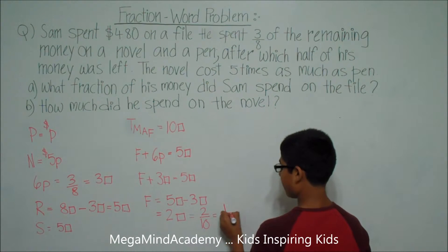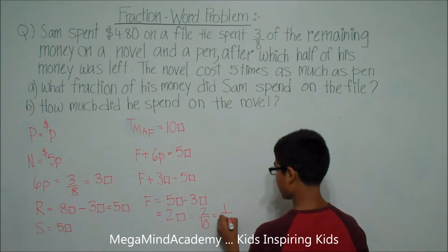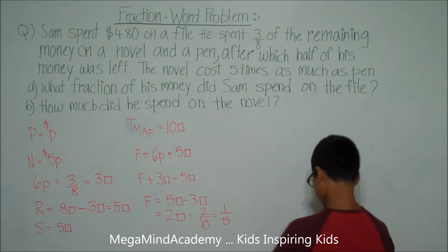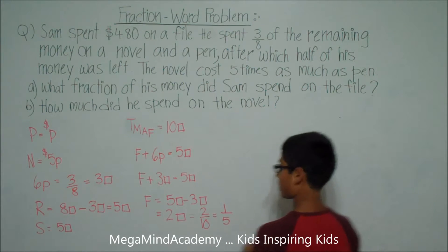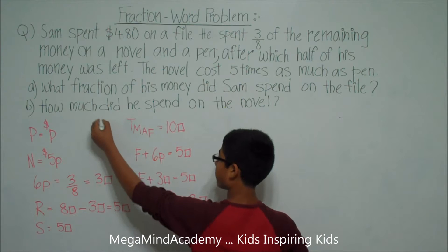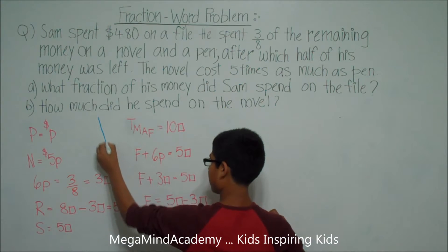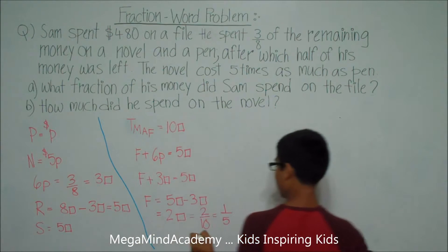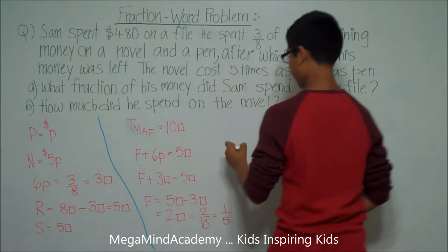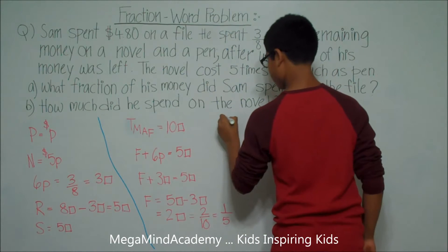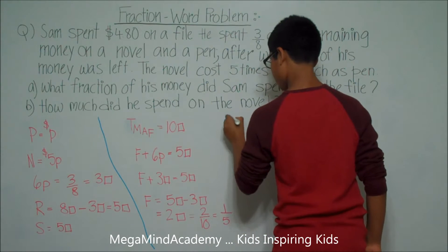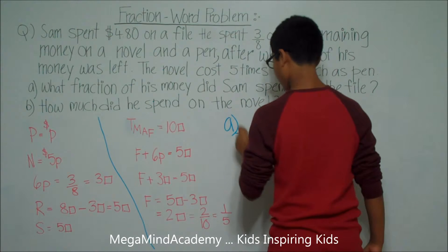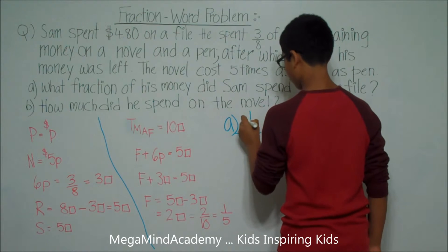So the file is equal to two-tenths — he spent two-tenths of his money on the file — which can be reduced to one-fifth. So the answer to Question A is one-fifth.